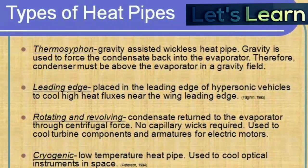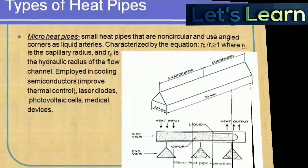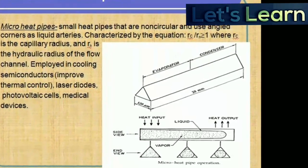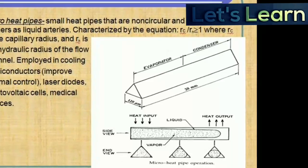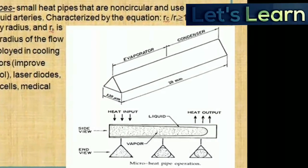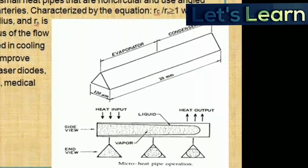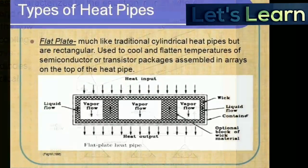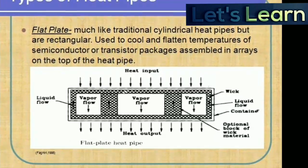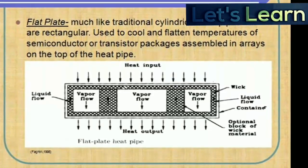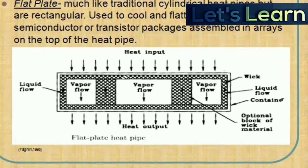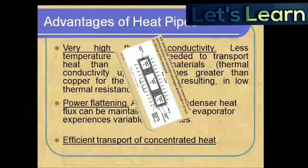The next type of heat pipe is the micro heat pipe. These are small non-circular pipes characterized by the equation RC/RS ≤ 1, where RC is the capillary radius and RN is the hydraulic radius of the flow channel. The next type is the flat plate heat pipe. These heat pipes are traditional but rectangular in shape, used to cool and flatten the temperatures of semiconductor or transistor packages, assemblies, and arrays.